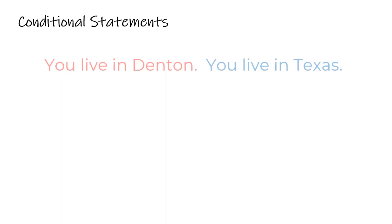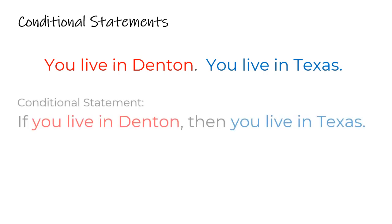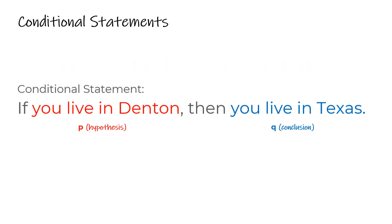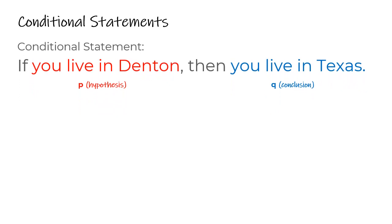Let's do an example of some conditional statements. Let's say you have these two statements: you live in Denton, you live in Texas. If one relies on the other, we can write that as a conditional statement: if you live in Denton, then you live in Texas. We took the first statement and used it as the hypothesis, where the conclusion was reliant on that hypothesis. Now let's think about whether or not this is true, because you're going to have to determine the truth value — is this a true or false statement? To be true, it has to be true in all situations, and as you change the order, it might determine whether or not the statement is still true.